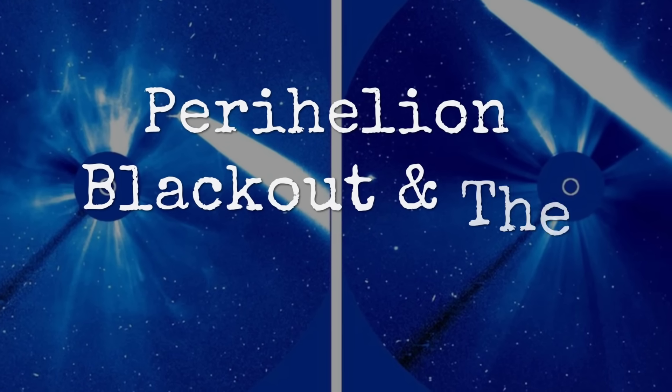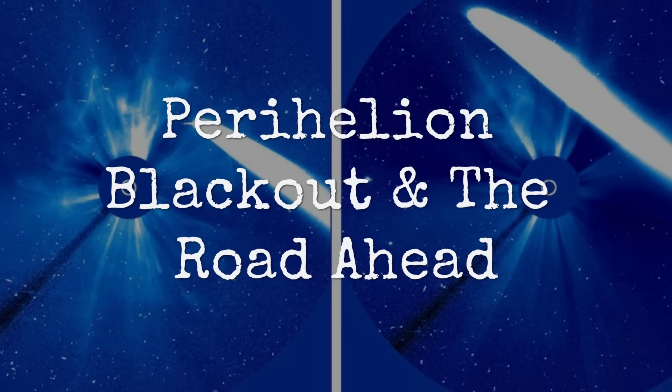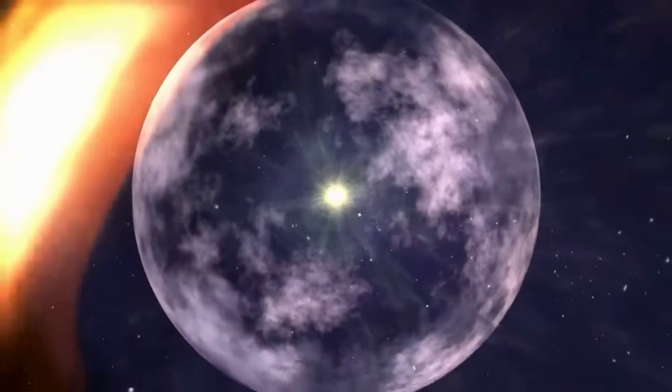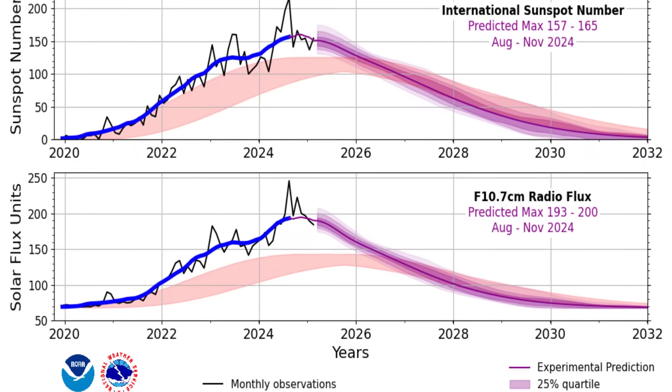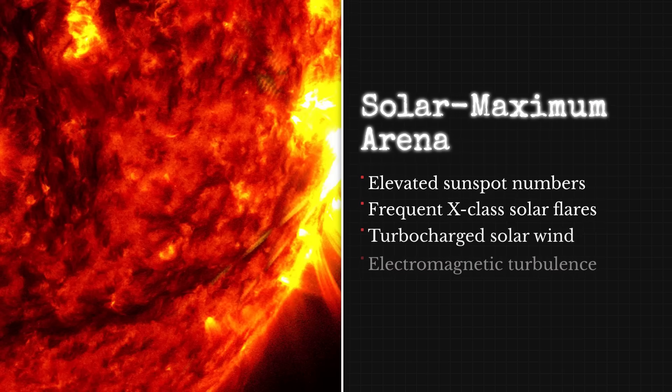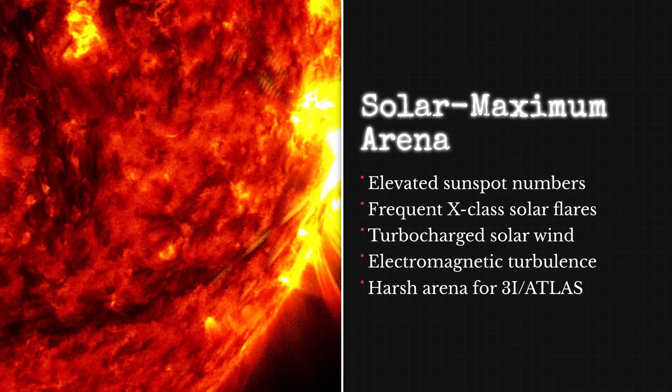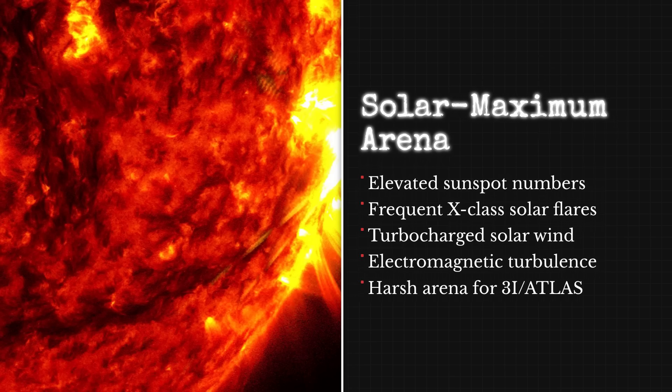What's really fascinating about 3I/Atlas' perihelion timing is the broader context of what's happening in our solar system right now. We're currently at solar maximum, the peak of the sun's 11-year activity cycle. Sunspot numbers are elevated. We're seeing frequent X-class solar flares, and the solar wind is more dynamic than usual.